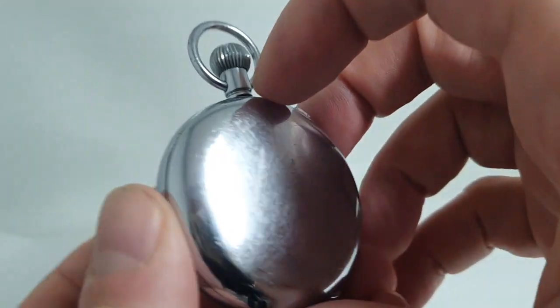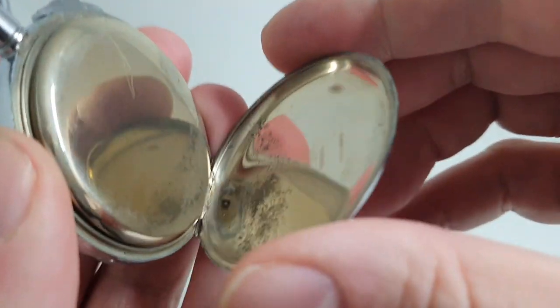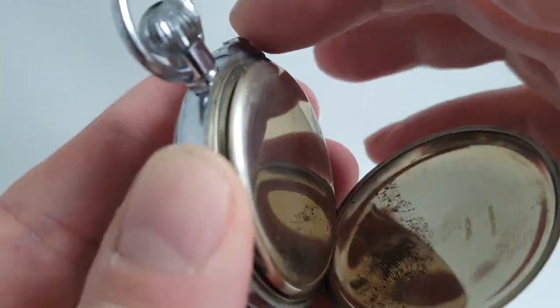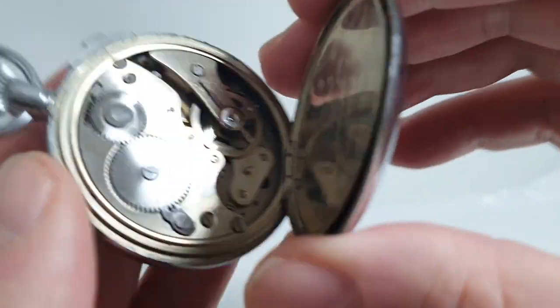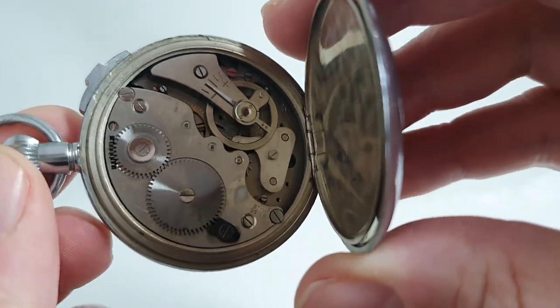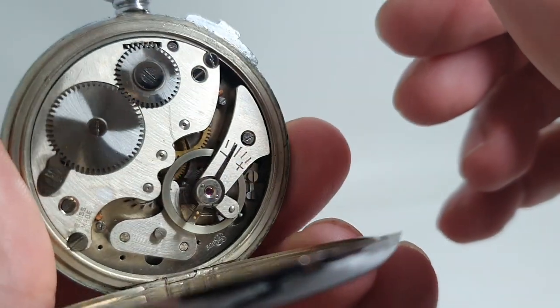So inside we've got the dust cover with a big thumbprint there, or fingerprint, and there you've got the movement. The movement is made by Valjoux, it's the 320.